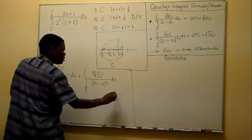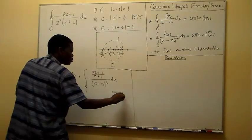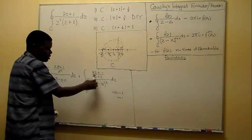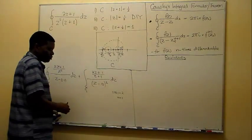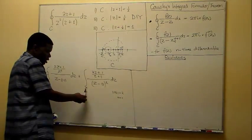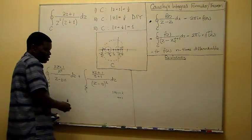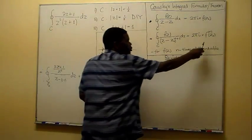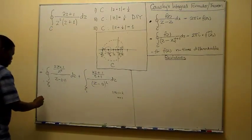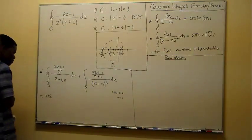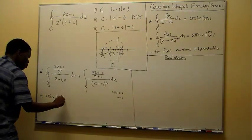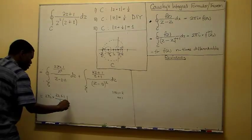If you check carefully, on the gamma zero side we have the version of the integration formula where n + 1 = 2, giving n = 1. So this function must be differentiated once. We're going to have 2πi multiplied by (2z + 1) over z-squared, evaluated at z = minus 1.